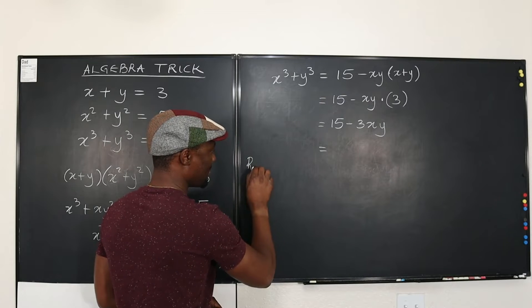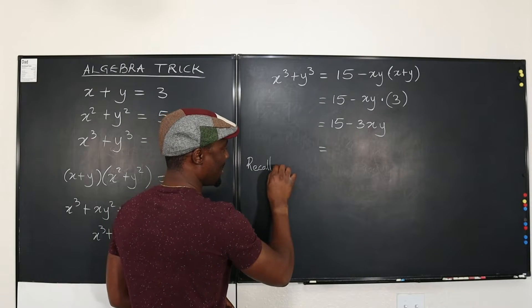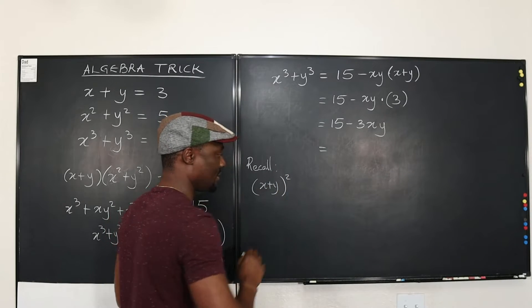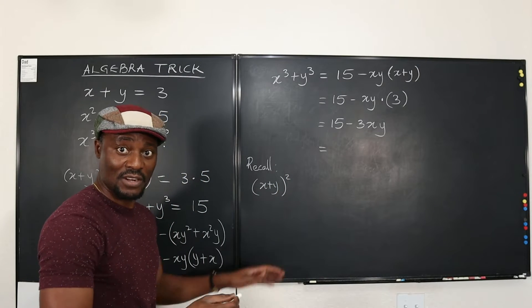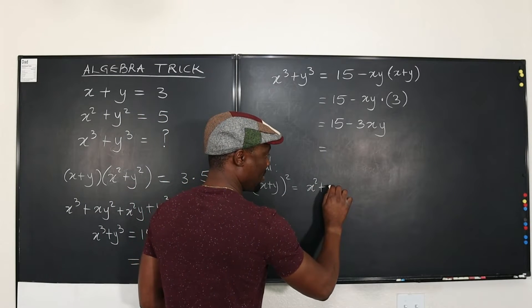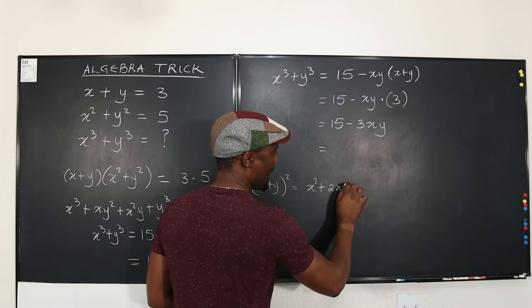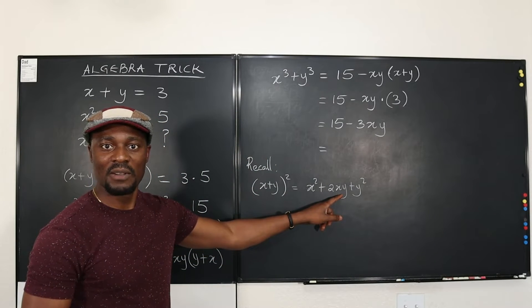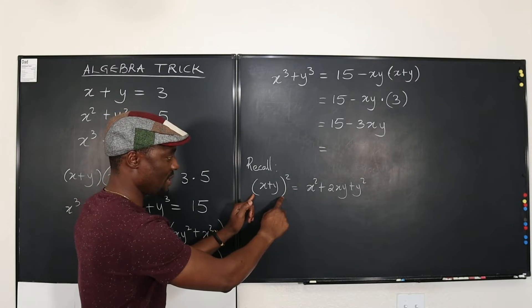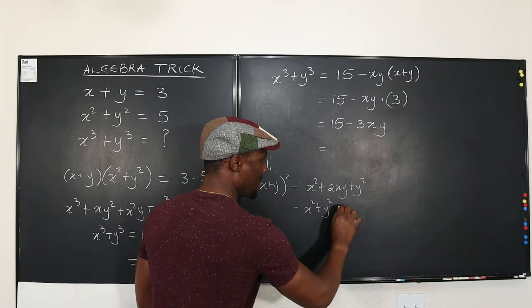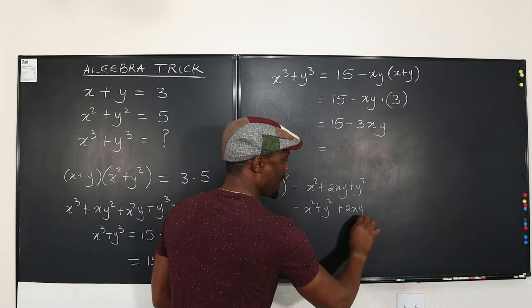Remember this? So recall. Recall that if you do X + Y and you square it, okay? Generally, when you square X + Y, it's going to be X² + 2XY + Y². Or XY has shown up. So when you square this, it's going to be X² + Y² + 2XY. Okay?